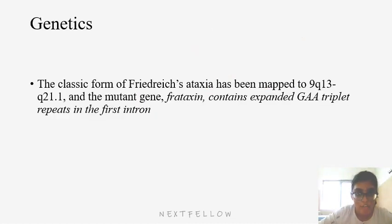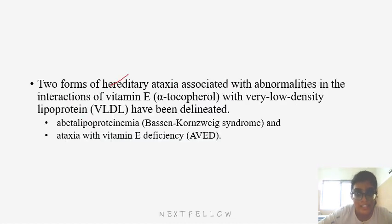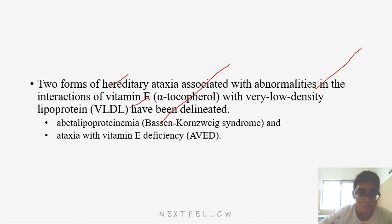The classical form of Friedreich's ataxia maps to chromosome 9q13-21.1, and the mutant gene frataxin contains expanded GAA triplet repeats in the first intron — an important MCQ. Two forms associated with vitamin E and alpha-tocopherol abnormalities are abetalipoproteinemia (Bassen-Kornzweig syndrome) and ataxia with isolated vitamin E deficiency. Both forms are clinically indistinguishable.